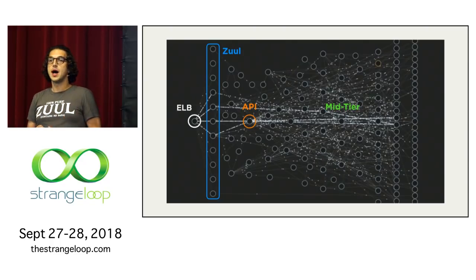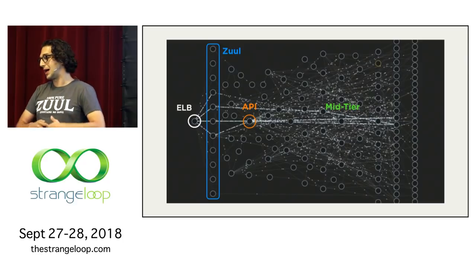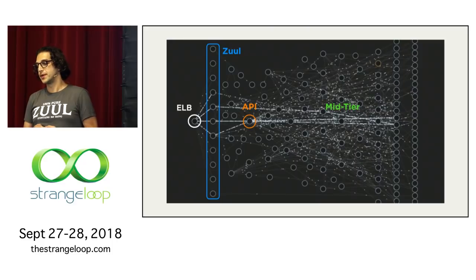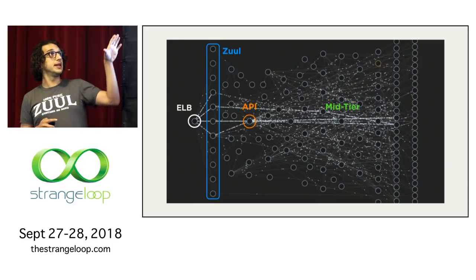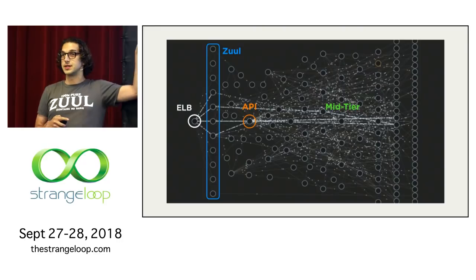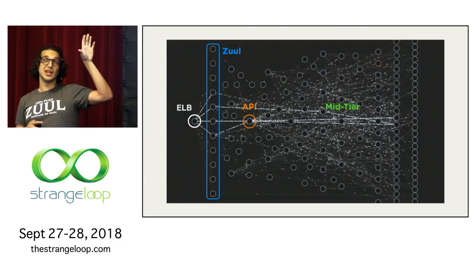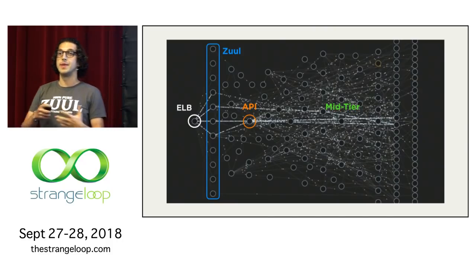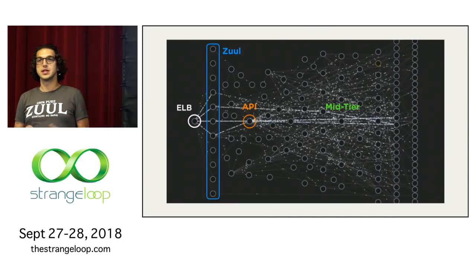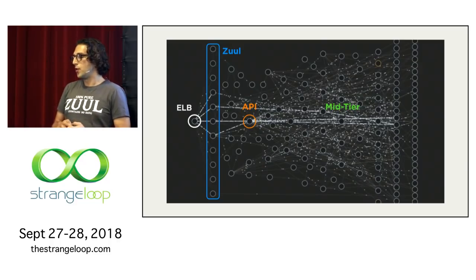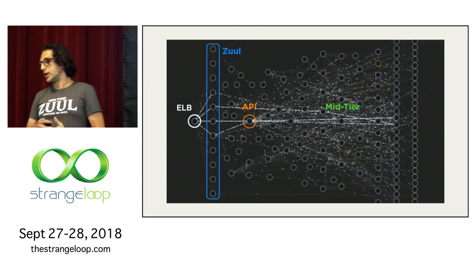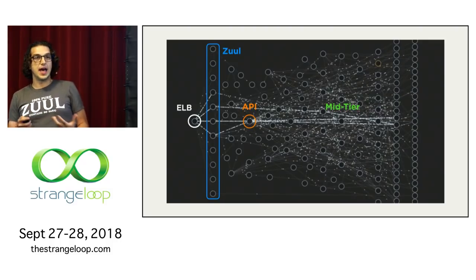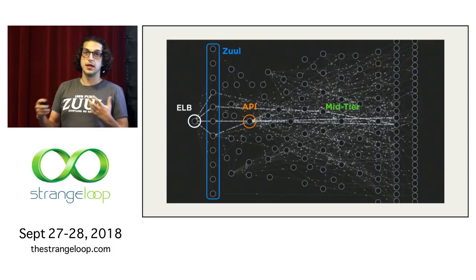Over time, the amount of back-ends that Zuul talks to has exploded and will probably continue to do so. It's important to keep in mind that each one of these dots is a service — it could be composed of potentially hundreds of instances and dozens of critical metrics that we may need to sift through just to see what's going on. So when we inevitably run into production incidents, we need to root cause them as fast as possible. When we had just a handful of origins, it was mostly doable.